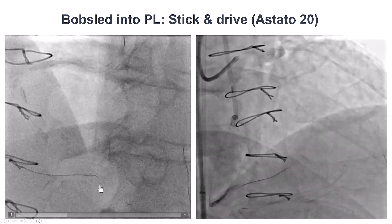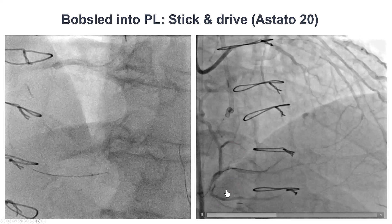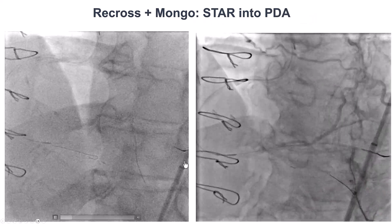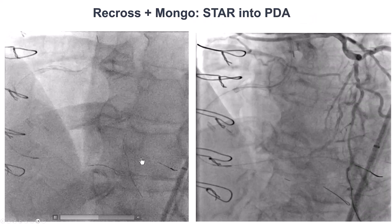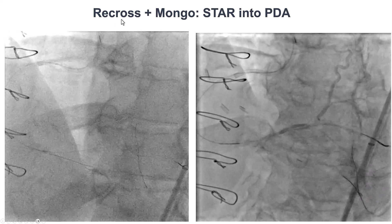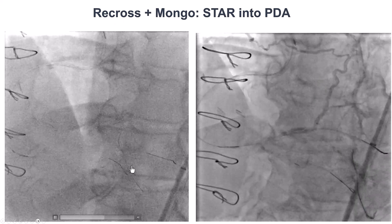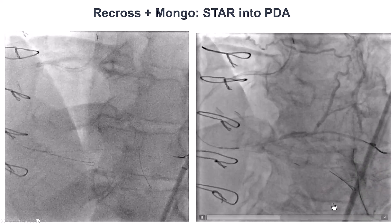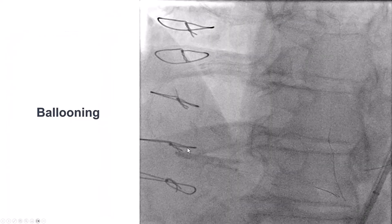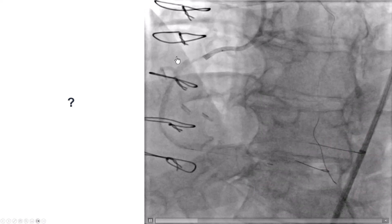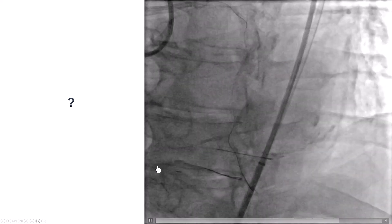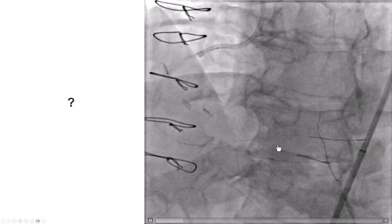We eventually did pop-sled into the posterolateral and performed the stick-and-drive technique with an Astato 20 wire, which appeared to advance into the true lumen. This was switched for a workhorse guidewire, and then we used a dual-lumen microcatheter — the Recross — along with another polymer-jacketed Gladius Mongo, which also advanced into the PDA extraplaque space. Essentially, this was a STAR technique into the PDA. We ballooned both vessels and achieved some antegrade flow, with filling into the PDA and the posterolateral.